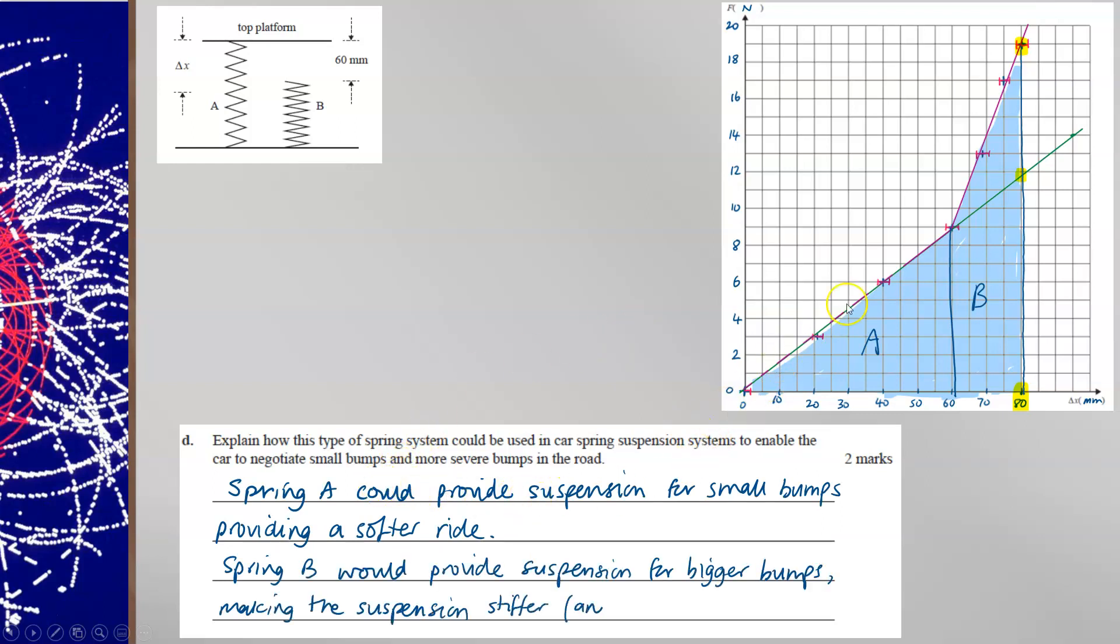So spring A provides a softer suspension for small bumps and spring B a stiffer suspension for bigger bumps. Thus prevents the system from bottoming out, i.e. where the wheel reaches the arches of the car.